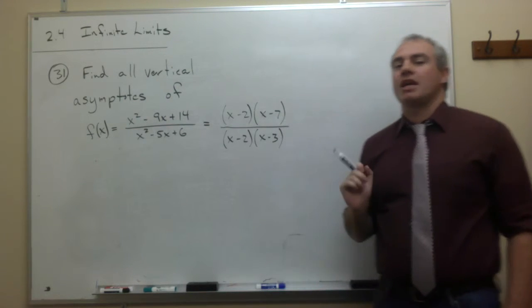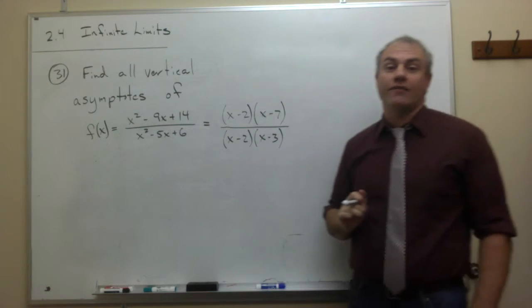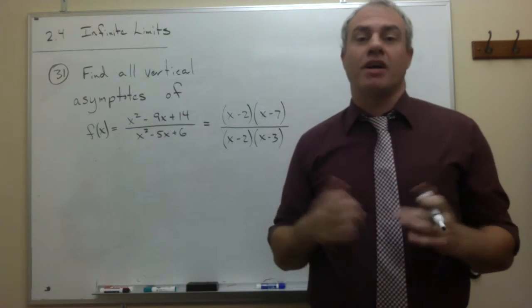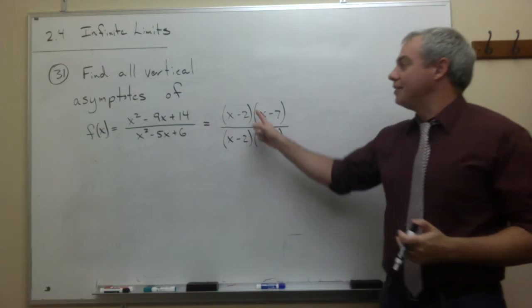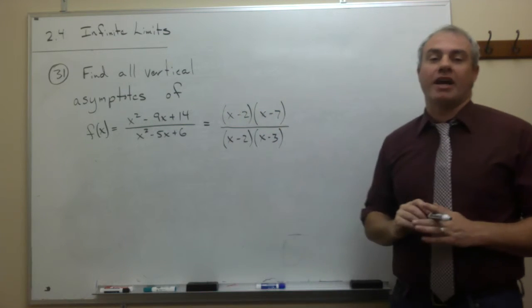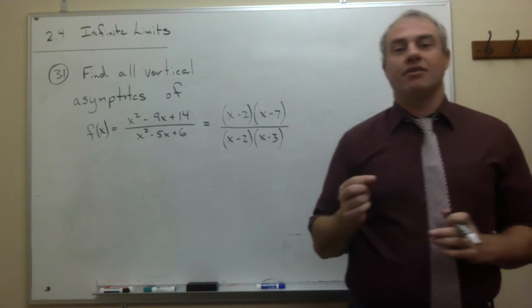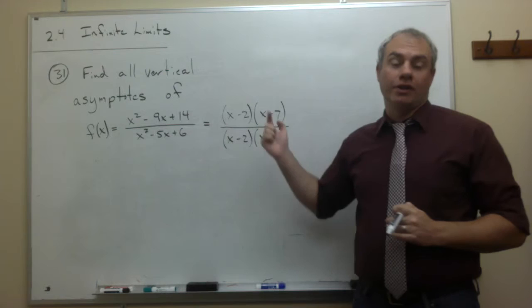Now, there's a real temptation right now to just say cross off those minus 2s, but that's not really legal because we're not taking a limit right now. This is an actual function, and this represents something to me. When I have this x minus 2 over x minus 2, what this tells me is at x equals 2, there's a hole in this graph.